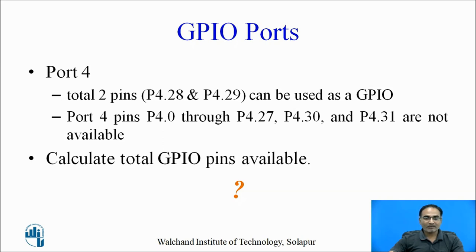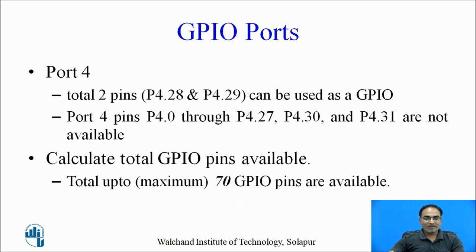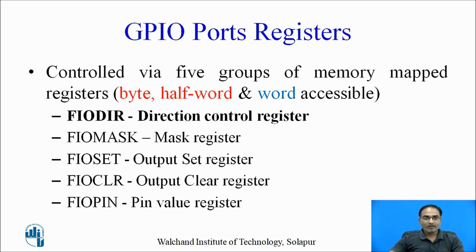Let us calculate the total number of GPIO pins available. In total, up to a maximum of 70 GPIO pins are available for the user. These ports can be controlled by five groups of memory map registers. They are byte addressable, half word addressable, or word addressable. The five registers are: fastIO direction control register, fastIO mask register, fastIO set register, fastIO clear register, and fastIO pin value register.